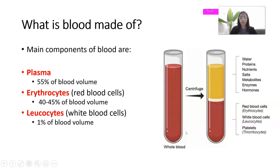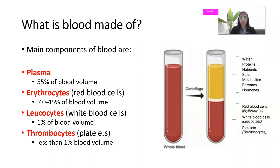We also have leukocytes — the white blood cells — which in a normal blood sample make up only about one percent of the volume. Finally, we have platelets, or thrombocytes, which are cell fragments and occupy less than one percent of the blood volume.